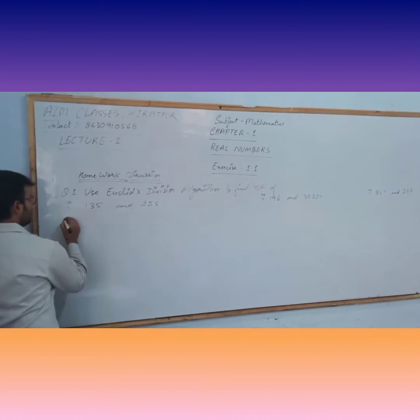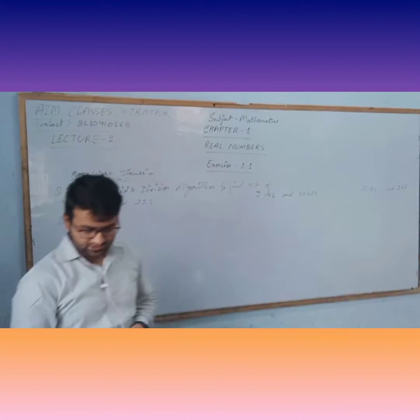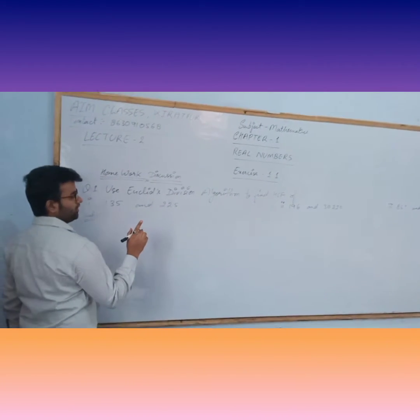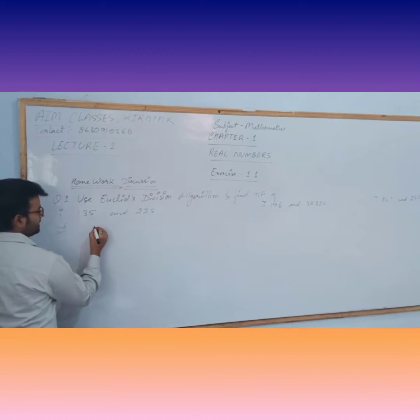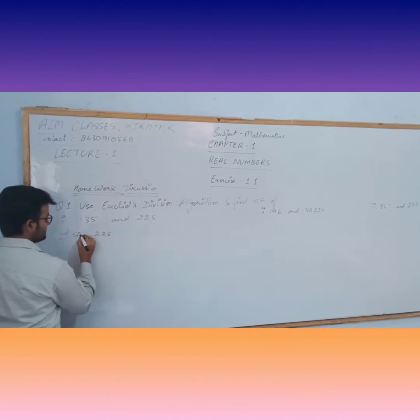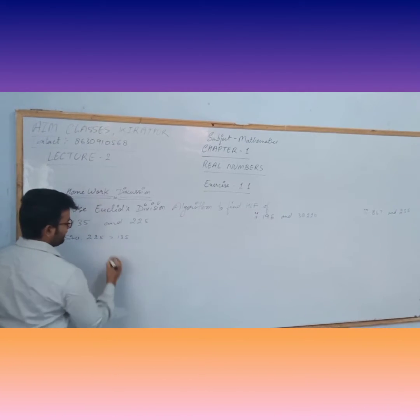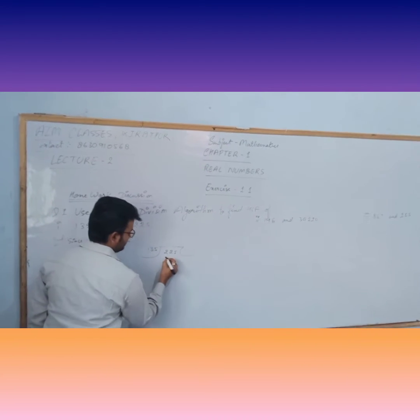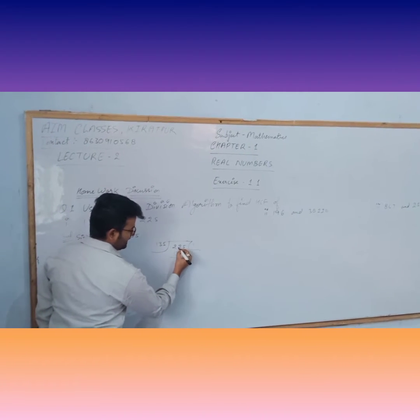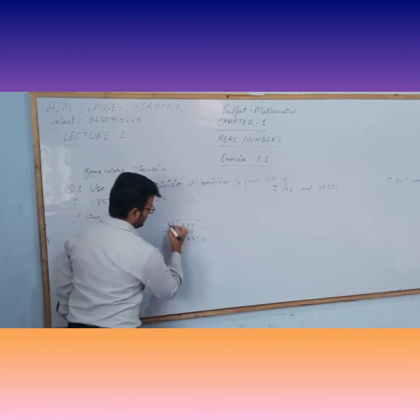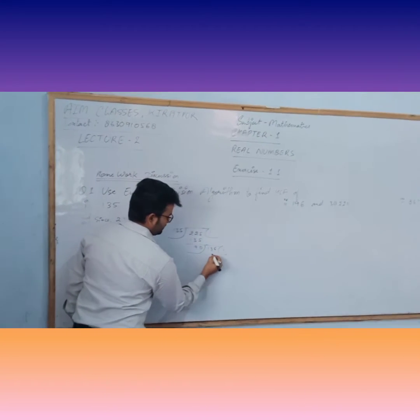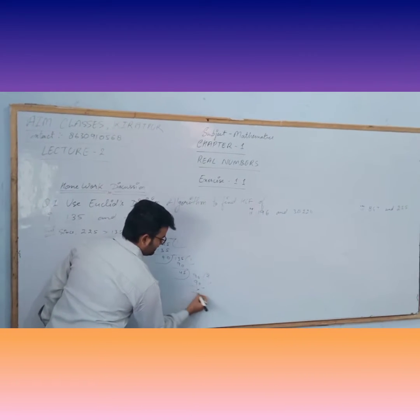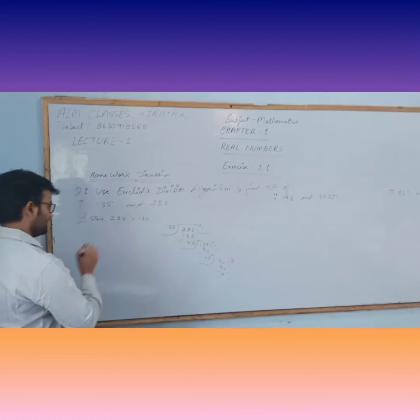As you have, these are the two given positive numbers. What you will do, first consider which one is greater. Since 225 is greater than 135, you will divide like this. One time, you will get 90. Again this will go to this side, one time, you get 45. This will go to this side again, two times, and we get the remainder zero.